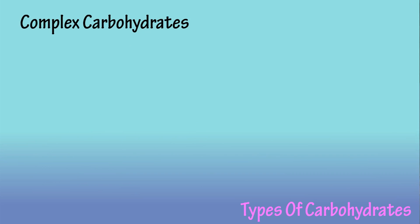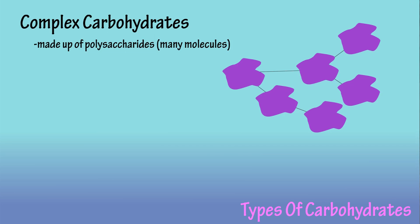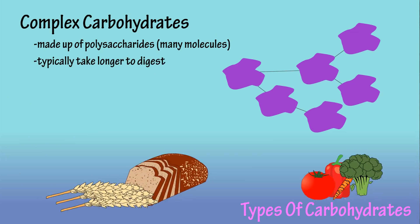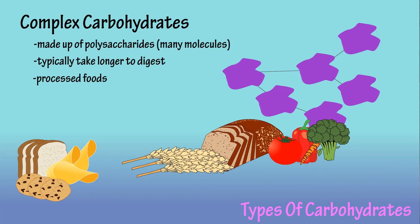Now let's look at complex carbohydrates. Complex carbohydrates are composed of polysaccharides, so because of their more complex molecular structure, they can take longer for the body to break down and digest, like whole grains and vegetables. However, some complex carbohydrate foods have been processed, which strips them of some of their natural, high fiber content, as well as vitamins and minerals, so they're digested faster and more easily.